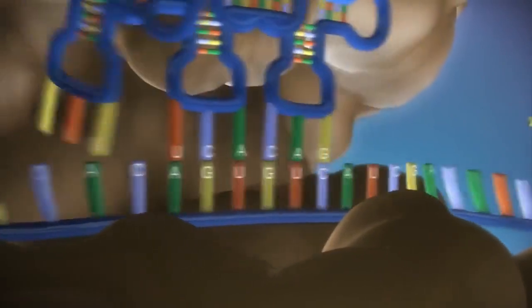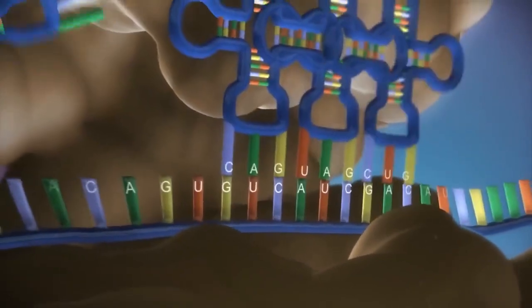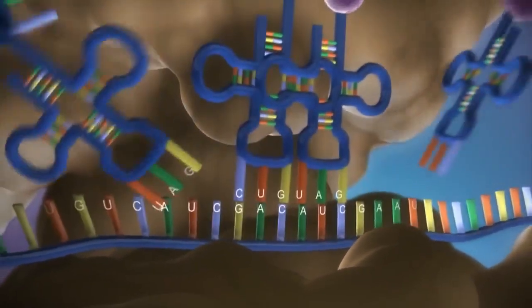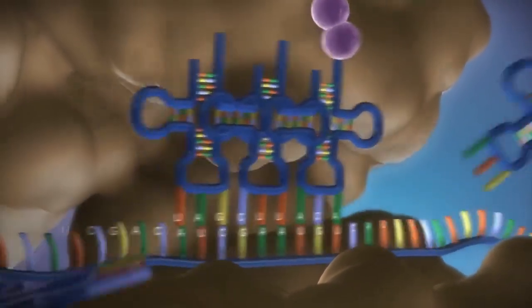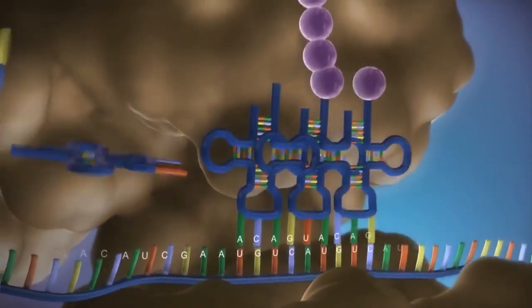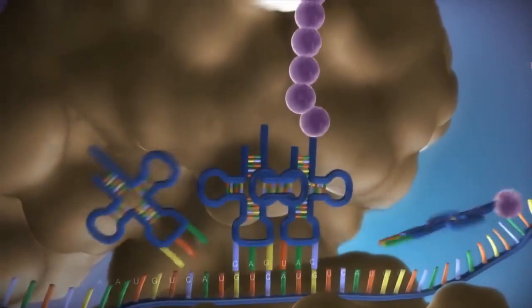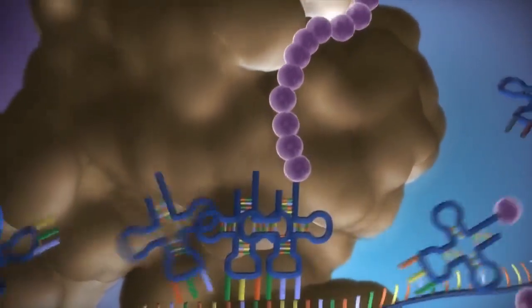The messenger RNA is read three bases at a time. As each triplet is read, a transfer RNA delivers the corresponding amino acid. This is added to a growing chain of amino acids.